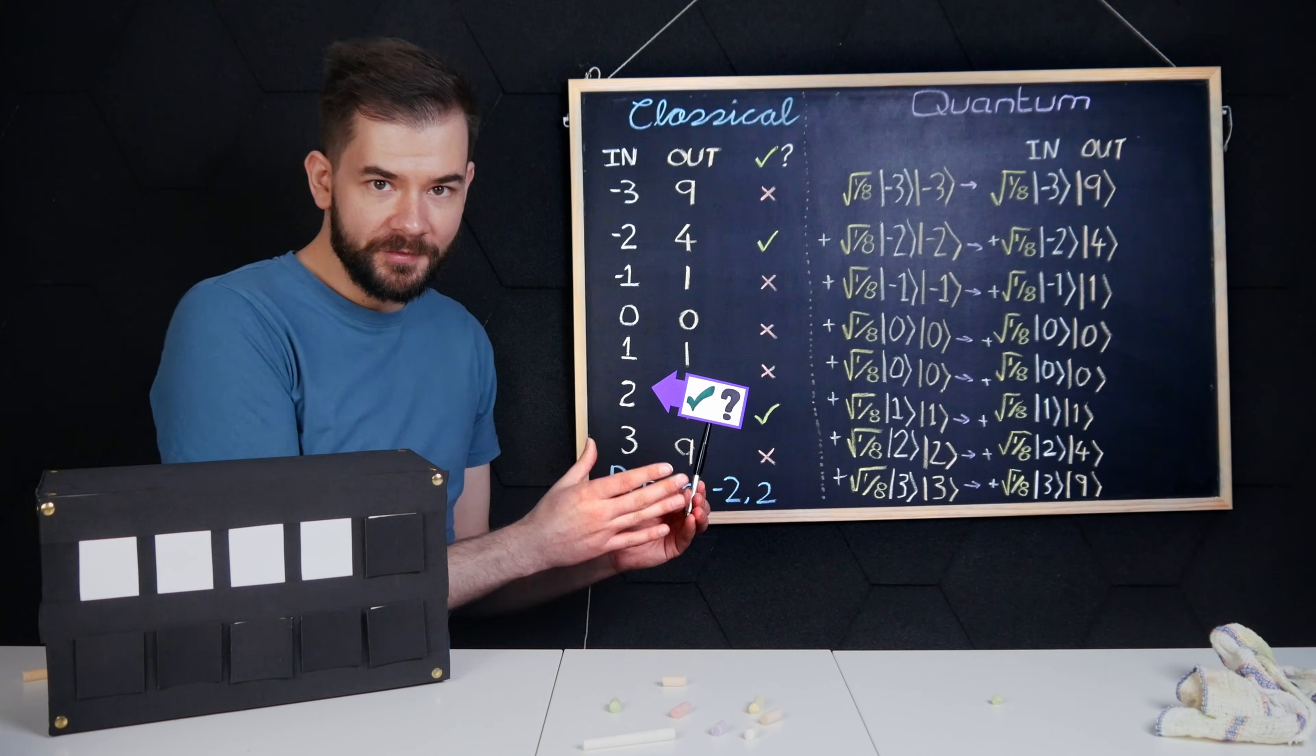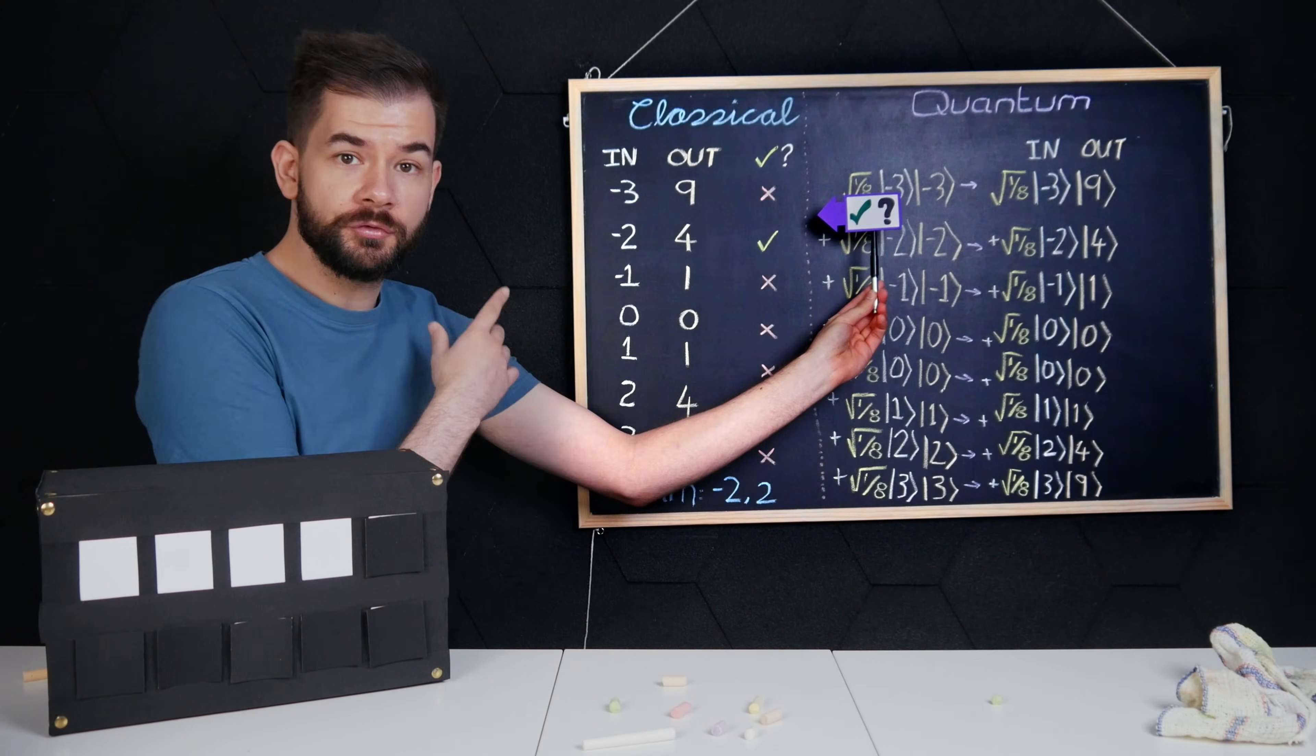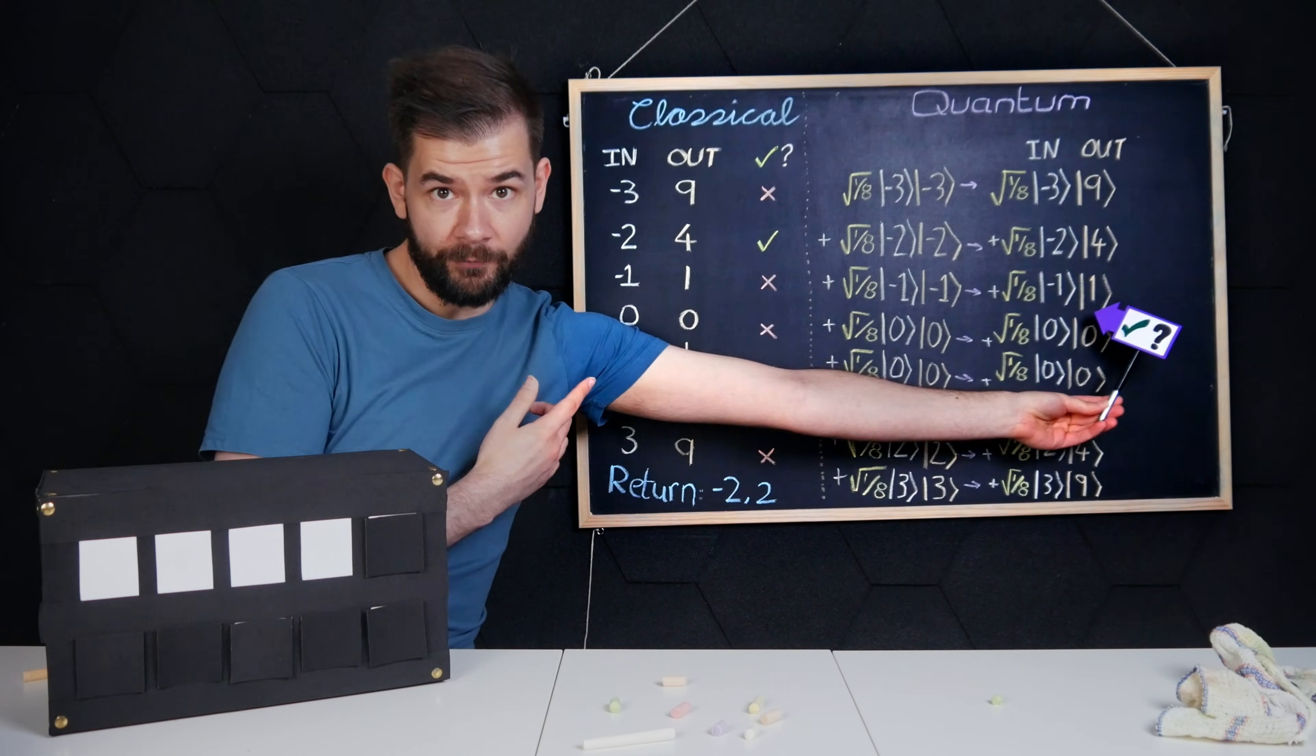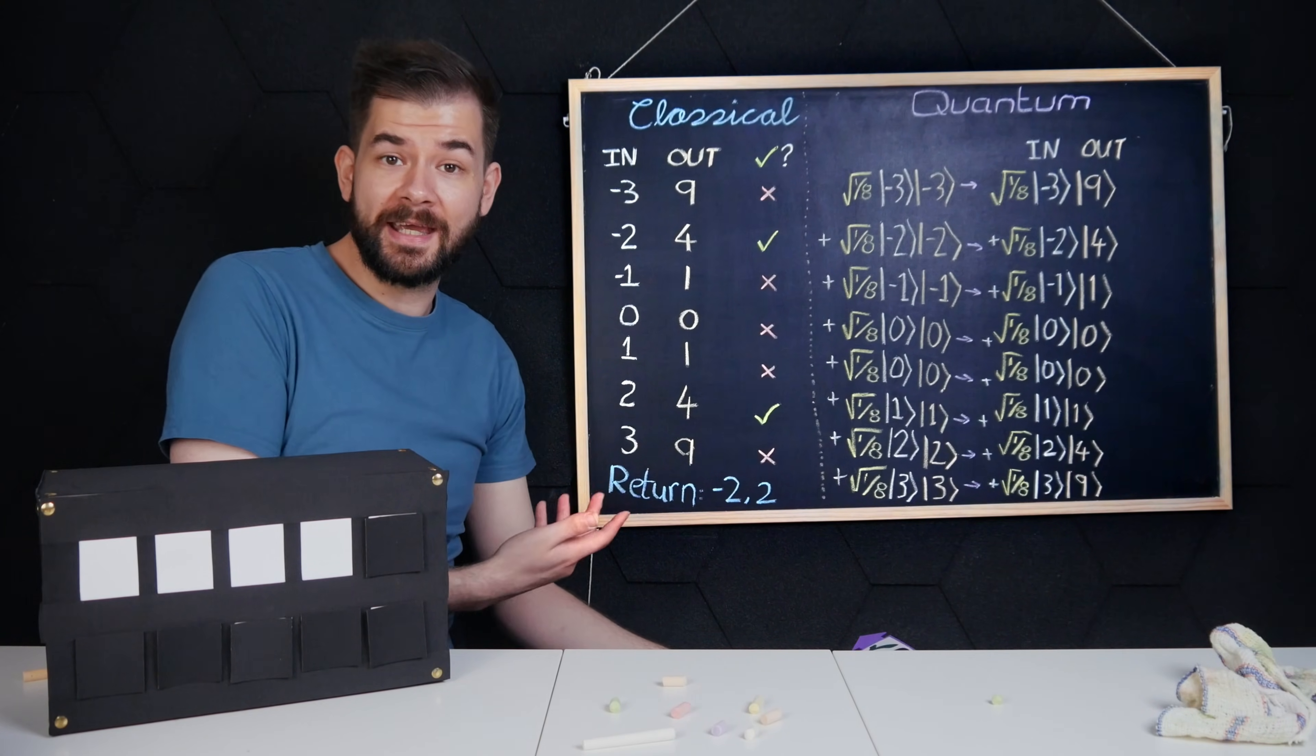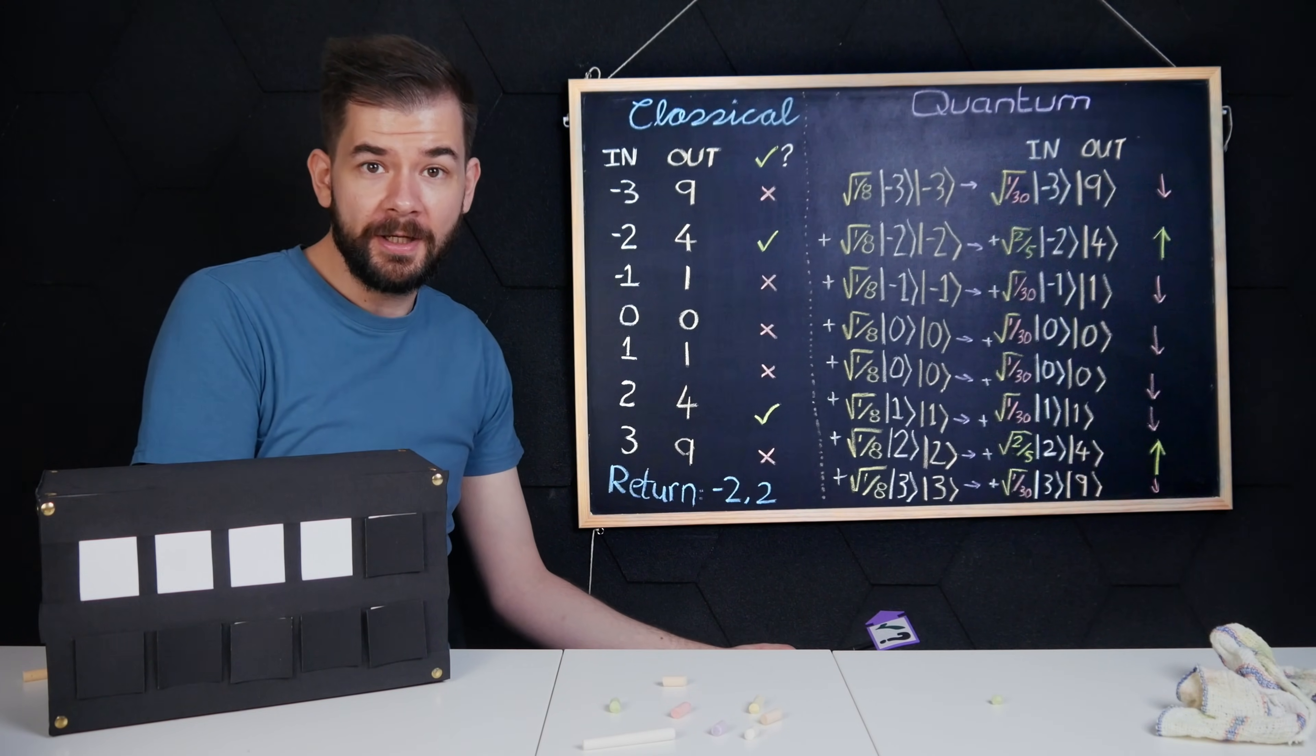Well, let's bring this quantum amirite function back into play. Classical amirite returns true or false on the correct output. Quantum amirite has the effect of boosting the probability of the correct output.